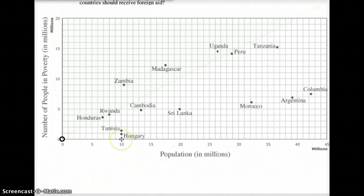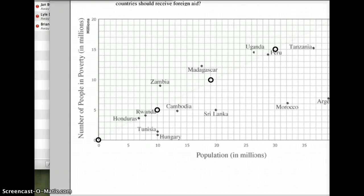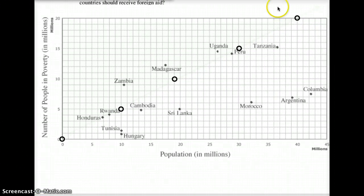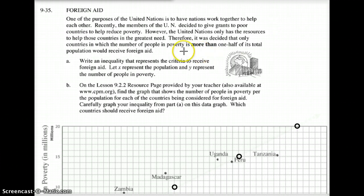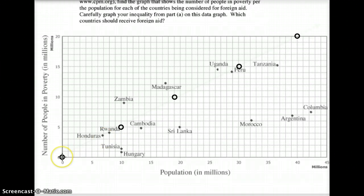We're going to plot points for the poverty line. If there are 10 million people, half would be 5 million. For 20 million people, half would be 10 million. For 30 million, half would be 15 million. And for 40 million, half of 40 would be 20 million. We need to make a dotted line for this — why dotted? Because it says more than, not more than or equal to. So I start at zero and graph through all of those dots.